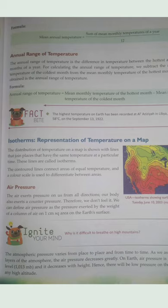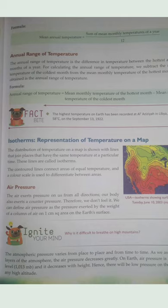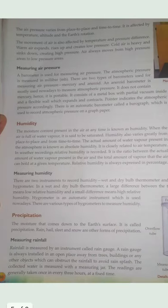The atmospheric pressure varies from place to place and time to time. As we ascend higher into the atmosphere the air pressure decreases — this is why climbing a mountain results in lower air pressure. At sea level the air pressure is highest. Air pressure is affected by temperature, altitude, and the earth's rotation.